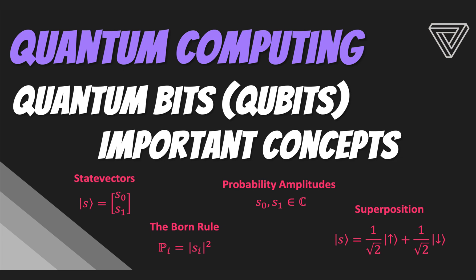In the previous video, we discussed how the spin of an electron corresponds to a possible physical implementation of a qubit. What I want to do in this video is do a quick recap of what we covered and clarify some of the concepts we introduced, like probability amplitudes, superposition, and the measurement principle.